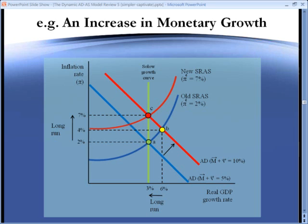At point C, nominal spending is now growing at 10%. We're back on the Solow growth curve because that curve gives us the potential growth rate of an economy at 3%. And, of course, inflation is then 7%. And expected inflation is 7%. So, we're back to long-run equilibrium.